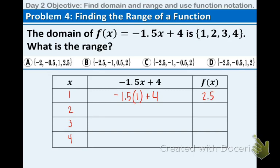Now we're going to input the 2 for x. -1.5 times 2 plus 4. That -1.5 times 2 is -3, -3 plus 4 is 1. Inputting the positive 3 now, we multiply and then add and we get -0.5.